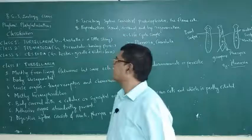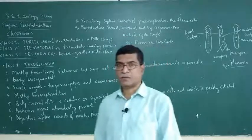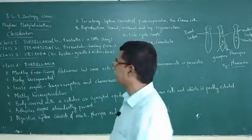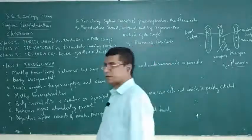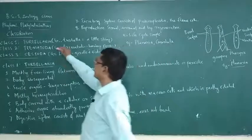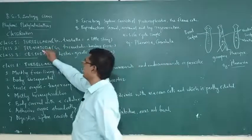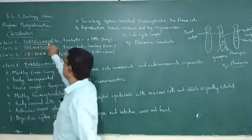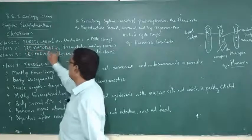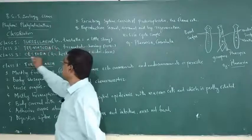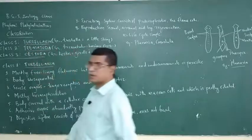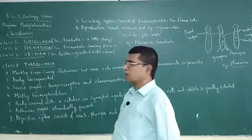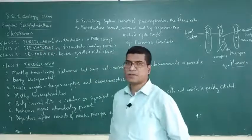Phylum Platyhelminthes has been divided into three classes: Turbellaria, Trematoda, and Cestoda. These are the three classes of Phylum Platyhelminthes.